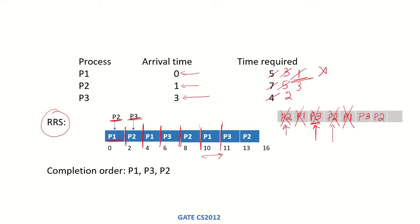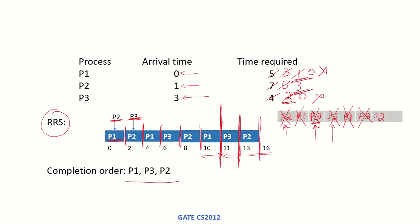P1 is now out of the system. Next, P3 runs from 11 to 13, completing its remaining 2 time units and also exits the system. Finally, P2 runs for its remaining 3 time units from 13 to 16. The completion order under round robin is P1, P3, P2. Gantt charts have been created so you can use these explanations to find the waiting time or turnaround time of the processes.